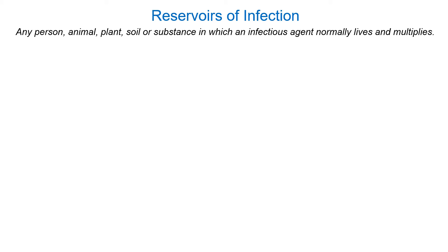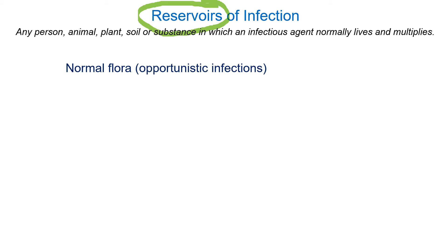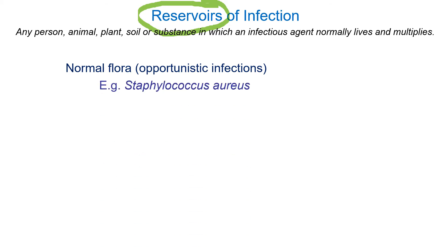Where do these infections come from? Organisms live in what we call reservoirs — this really just means where does the organism live out in the wild. One source is your normal flora. For example, Staphylococcus aureus lives on our skin in a normally commensal relationship. But in some cases it gets deeper and may cause boils, impetigo, bladder infections, bacteremia, and other serious conditions.